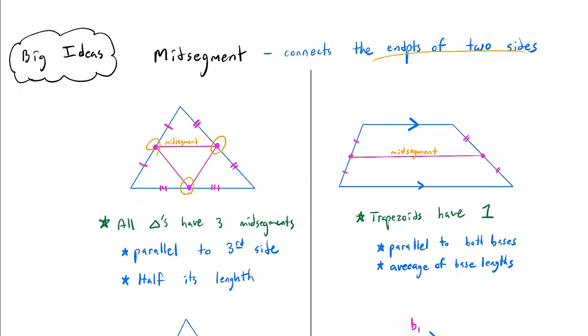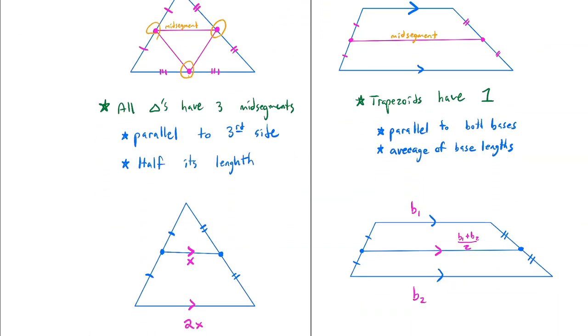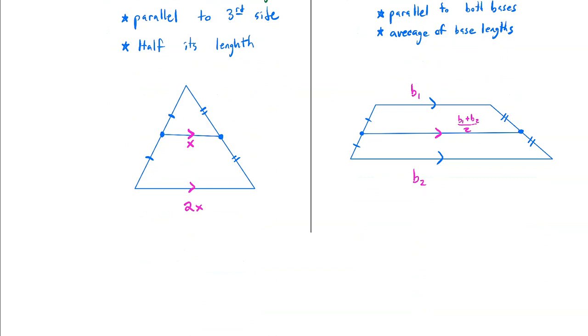Okay, so the properties are, this is just big picture, that a midsegment is always parallel to the third side of a triangle, or in the trapezoid, it's parallel to the two bases. And it's the average of the two bases, or it's half the length. So basically, it's parallel and something to do with half.